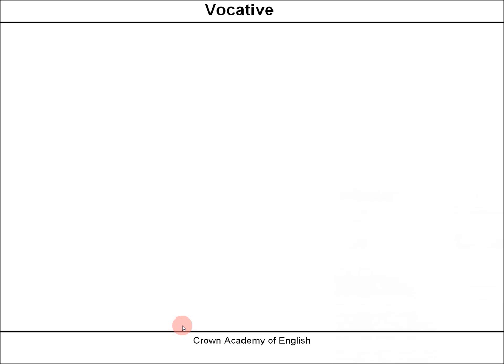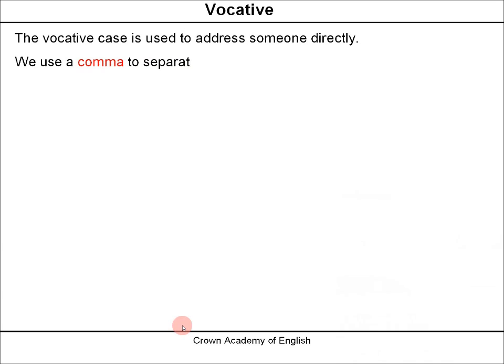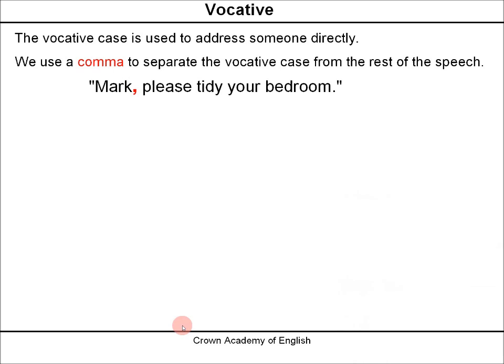Let's look at the vocative case. The vocative case is used to address someone directly. We use a comma to separate the vocative case from the rest of the speech. Example: 'Mark, please tidy your bedroom.' So Mark is the vocative case — we are addressing Mark directly, talking to him and asking him to tidy his bedroom. We use the comma to separate the vocative case from the rest of the speech.